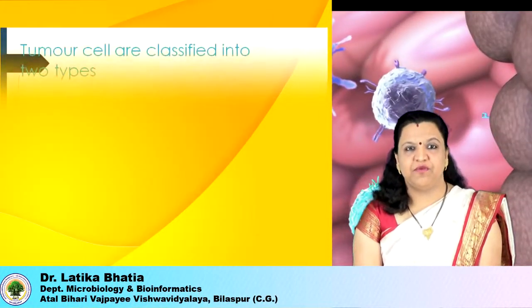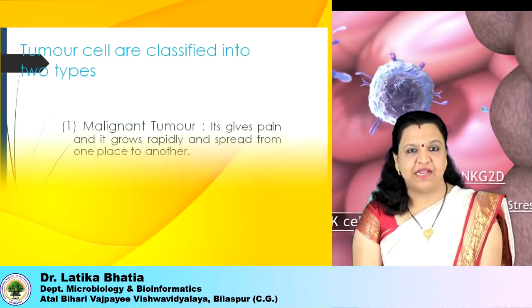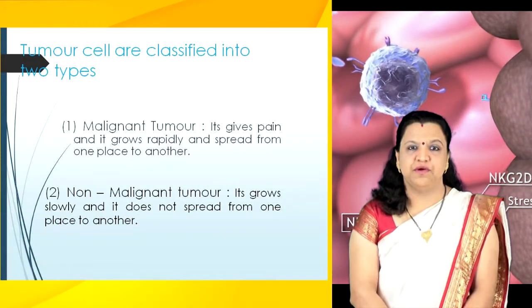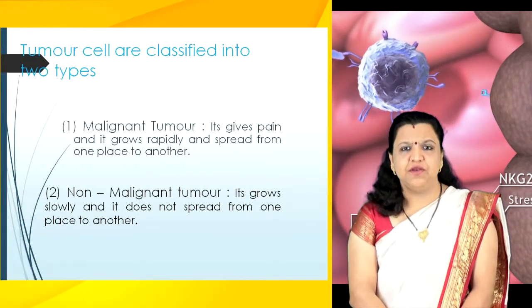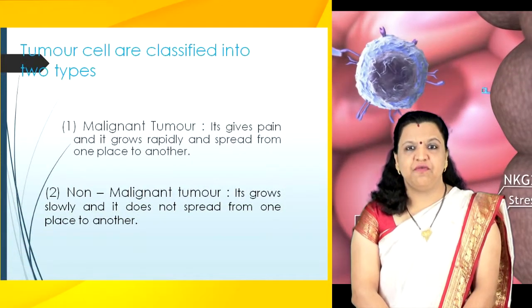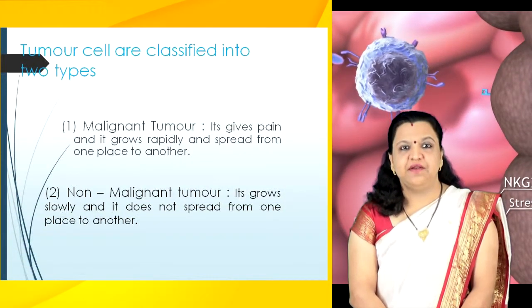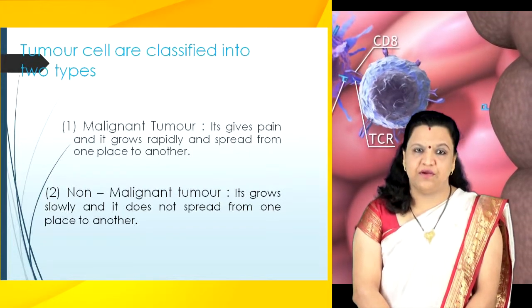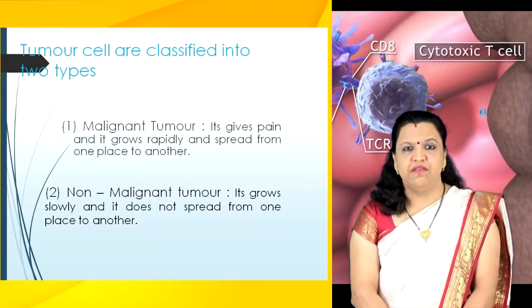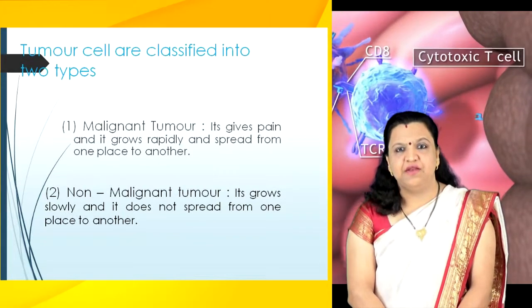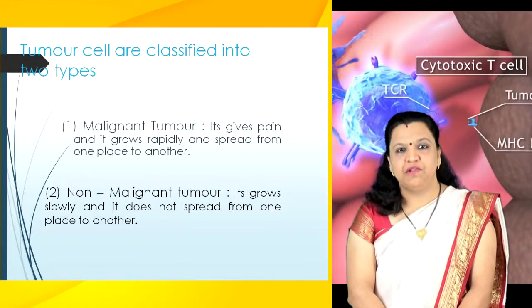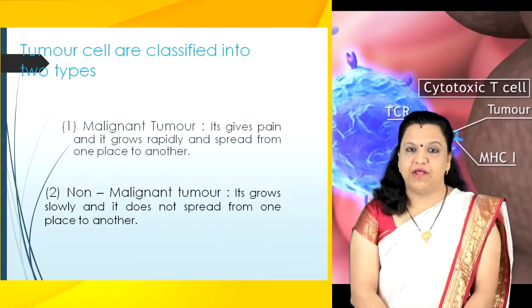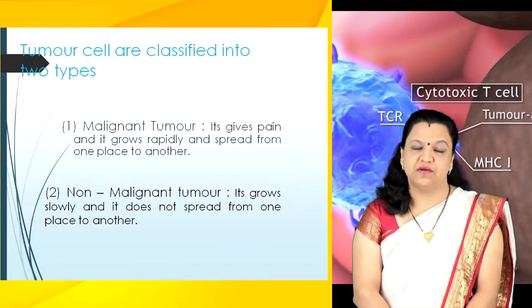There are two types of tumors: malignant tumor and non-malignant tumor. A malignant tumor gives pain, grows rapidly, and spreads from one place to another. Whereas a non-malignant tumor grows slowly and does not spread from one place to another.